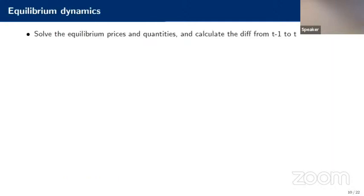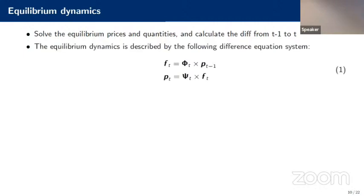We characterize equilibrium dynamics in closed form by making two key transformations — derivations are in the paper. We aggregate flows and prices into matrix form: a vector of flows for each fund and a vector of prices for each asset, and look at changes from period T-1 to T. This allows us to write down in matrix form the two key dynamics: how do changes in prices across all assets in the previous period affect flows into and out of institutions this period, and in turn, how do flows this period affect prices this period?